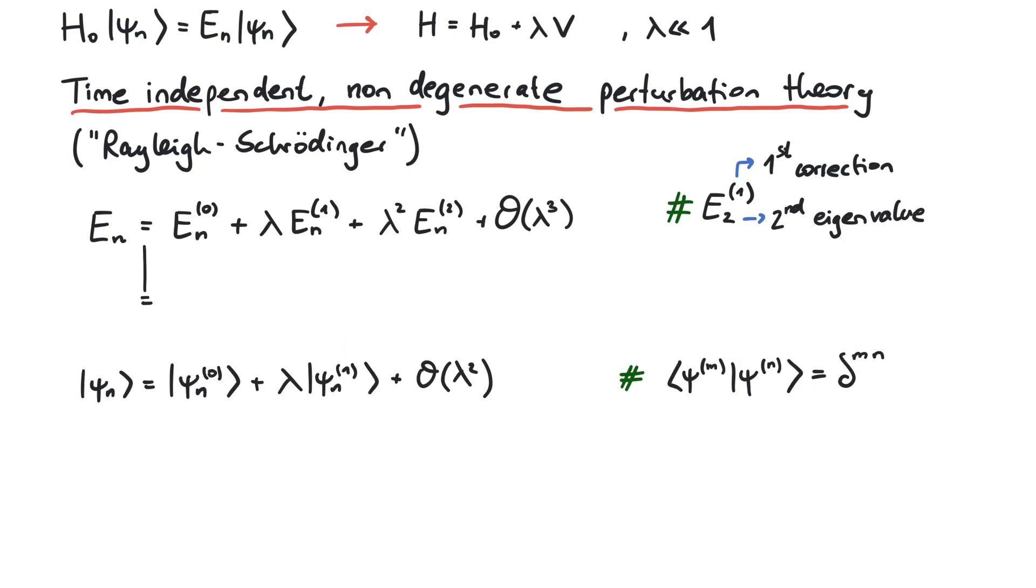The first order correction to the nth energy eigenvalue is given by a matrix element, where we evaluate the new potential between the unperturbed nth eigenfunctions. That's usually a rather quick calculation.